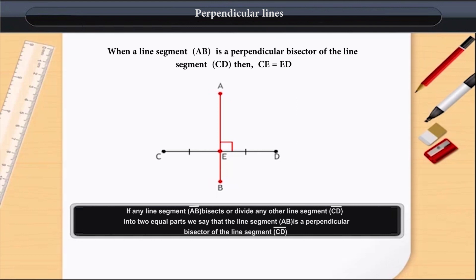This means that if any line segment AB bisects or divides any other line segment into two equal parts, we say that the line segment AB is a perpendicular bisector of the line segment CD.